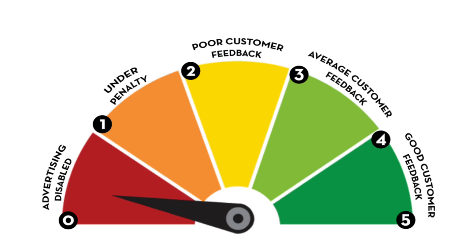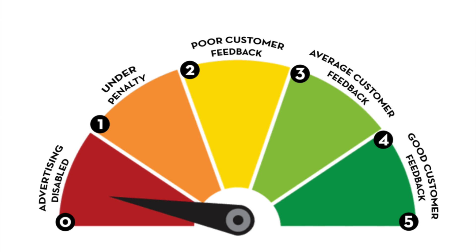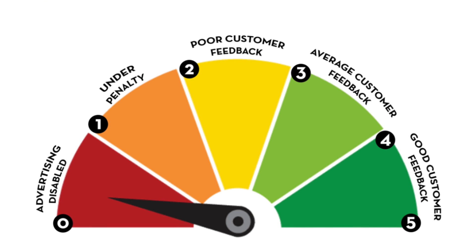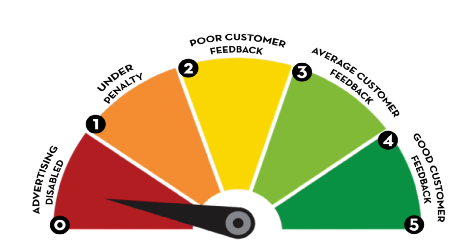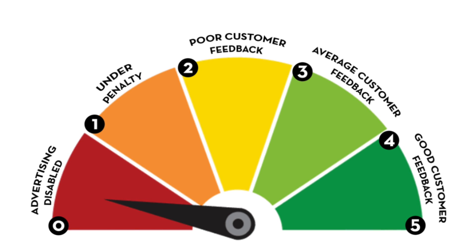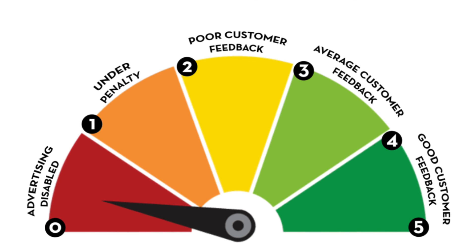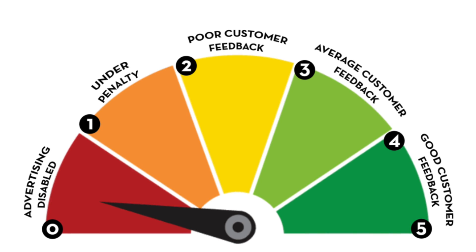On screen you can see a chart showing scores from zero to five. Scores from zero to one means your advertising is disabled — the page can no longer advertise on Facebook due to extremely poor customer feedback. The orange column, scores from one to two, means you're under penalty: ads receive a delivery penalty and will cost more and reach fewer people.